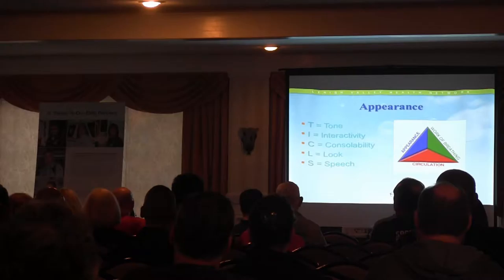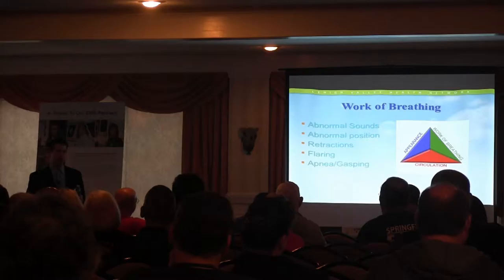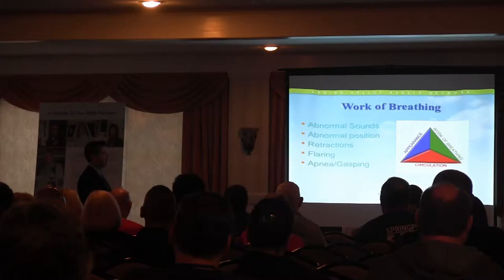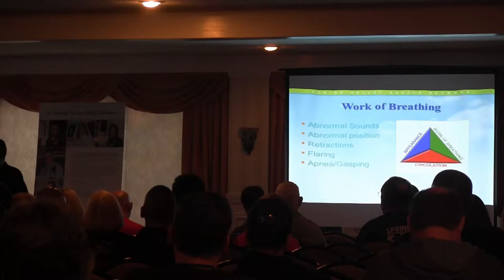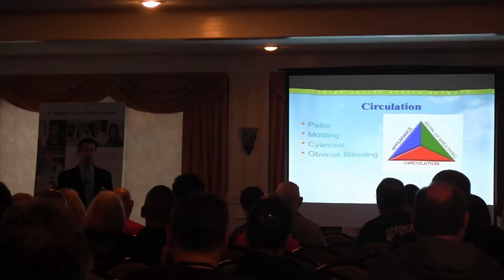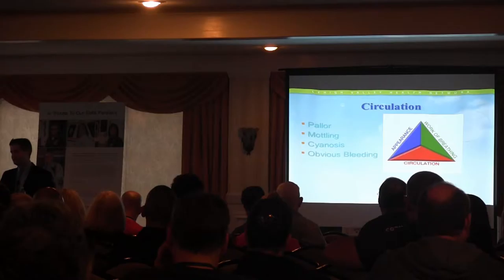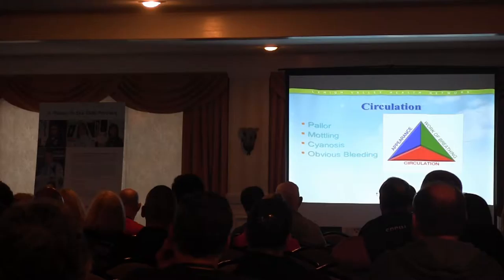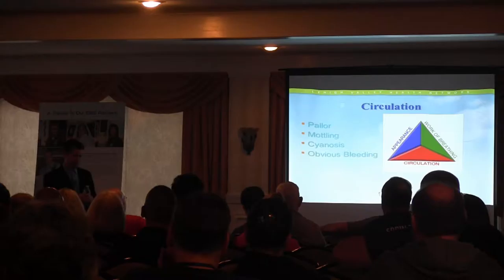Work of breathing: listen for abnormal sounds — grunting, wheezing, stridor. Abnormal positioning, retractions — are they using neck muscles, breathing from their belly, ribs showing, nasal flaring, or gasping? Circulation is the one that gets missed most in kids. You think they look okay, but kids decompensate quickly — they're fine, fine, fine, and then they're not. Check capillary refill, look for cyanosis, check under the skin for mottling, and note any obvious bleeding.